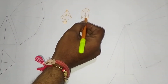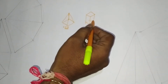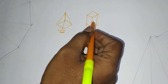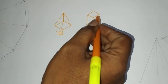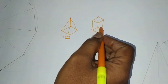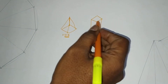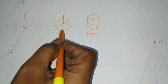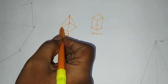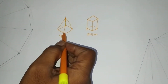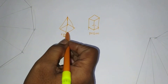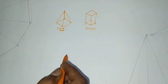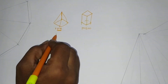Here in the prism, a square prism has four sides and four rectangular side faces. Here in the pyramid, four sides are there at the base. The base is square and the side faces are isosceles triangles.